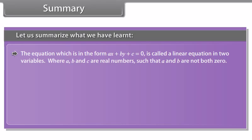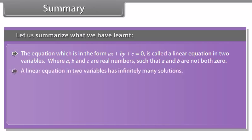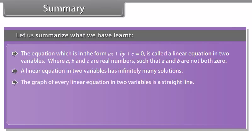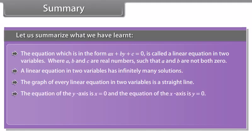Did you know? The reason a degree-1 polynomial equation AX plus BY plus C equals 0 is called a linear equation is that its geometrical representation is a straight line. The graph of an equation of the form Y equals KX is a line which always passes through the origin.